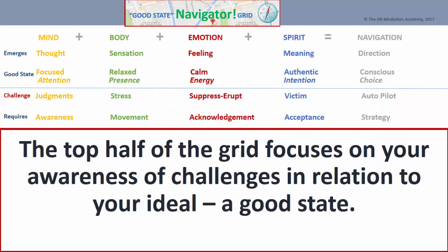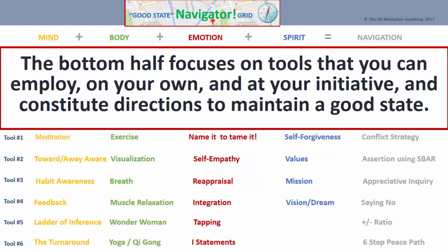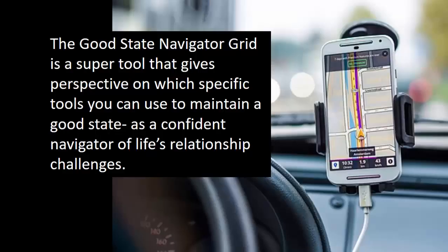The top half of the grid focuses on your awareness of challenges in relation to your ideal — a good state. The bottom half focuses on tools you can employ on your own and at your own initiative, which constitute directions to maintain a good state. The Good State Navigator Grid is really a super tool that gives perspective on which specific tools you can use to maintain a good state as a confident navigator of life's relationship challenges.